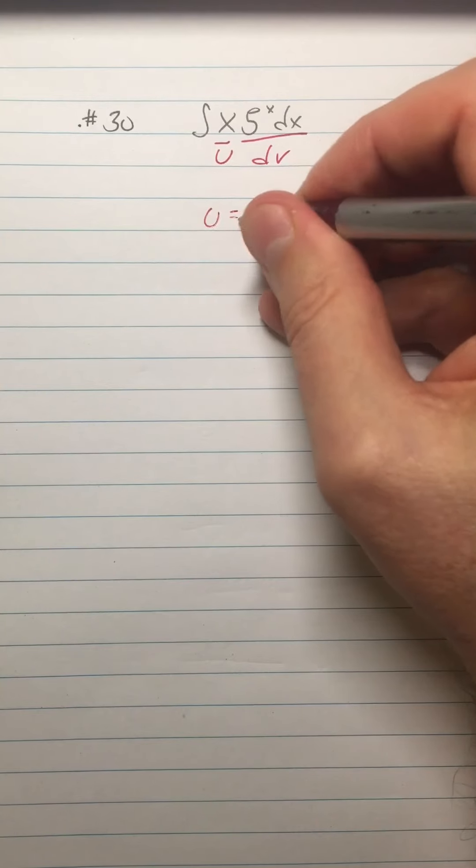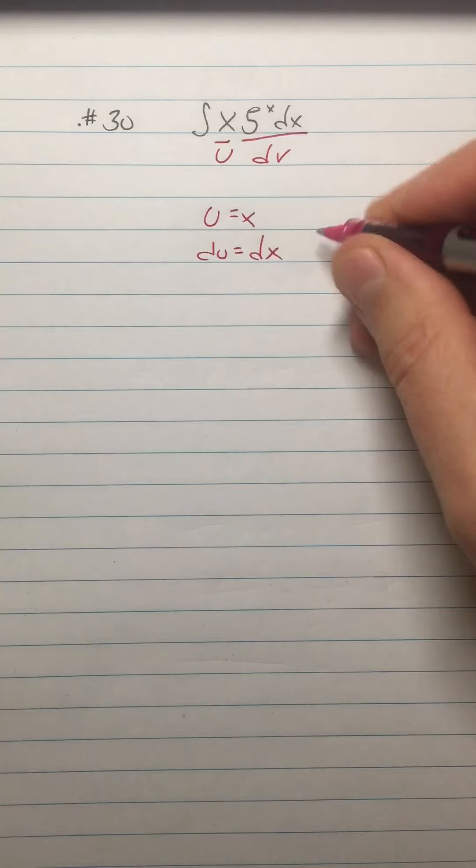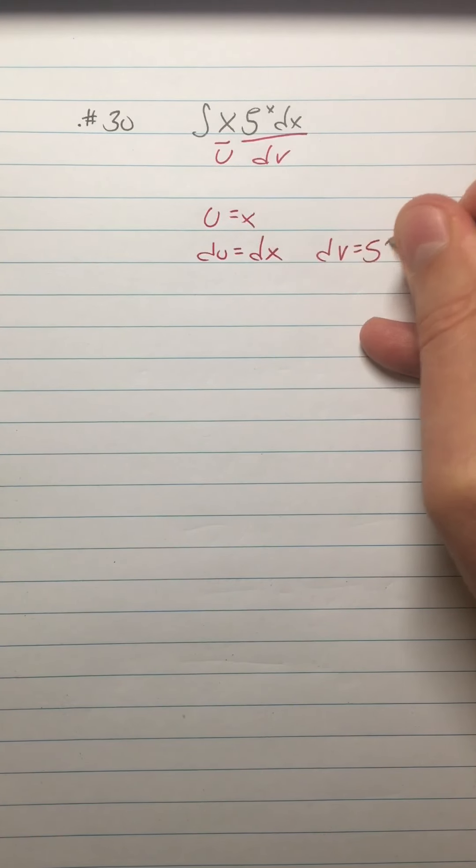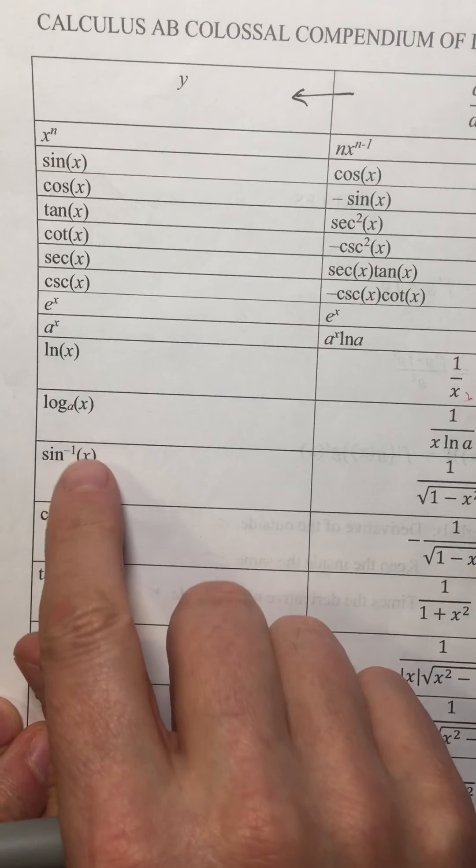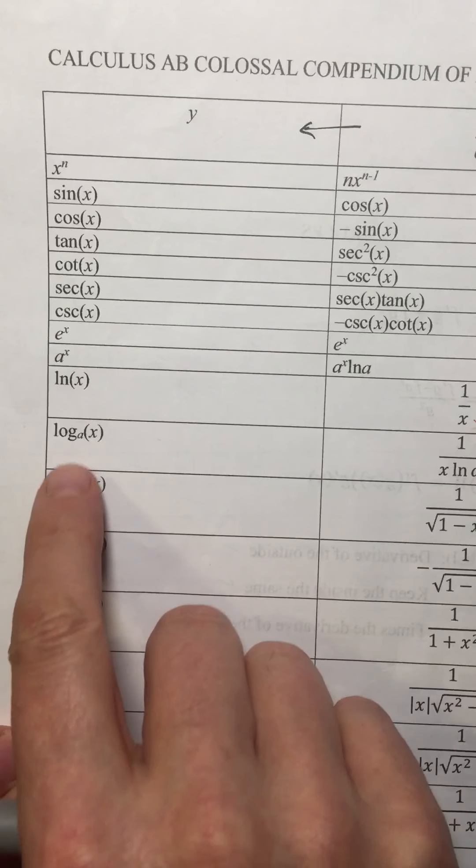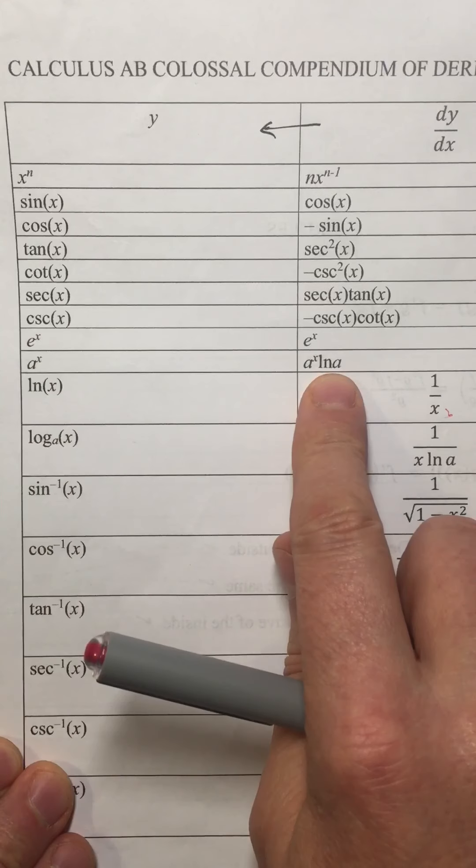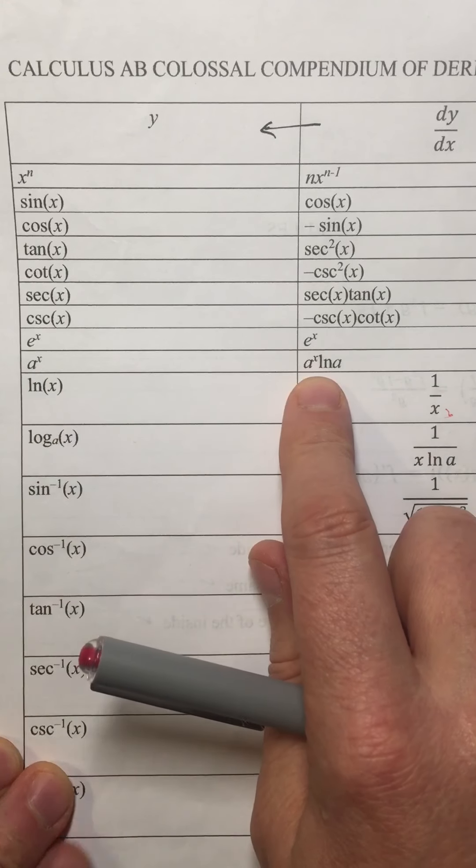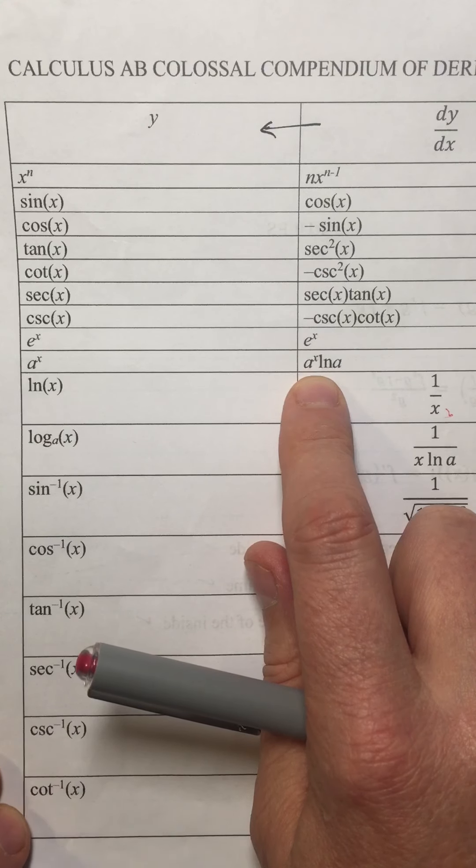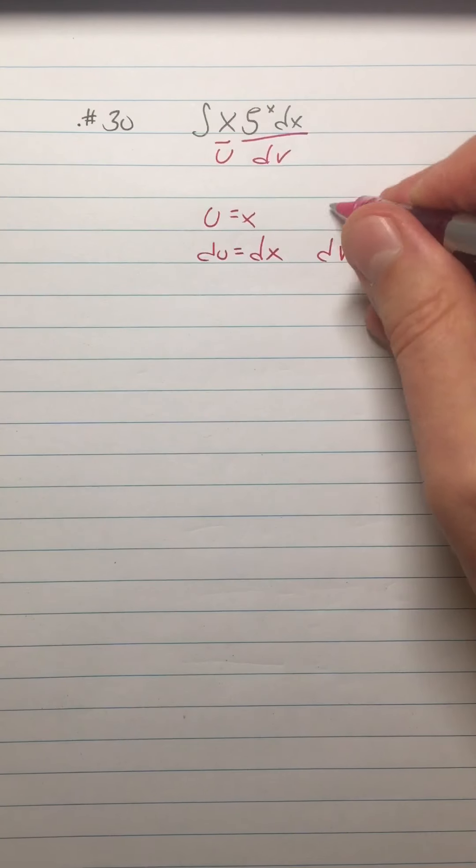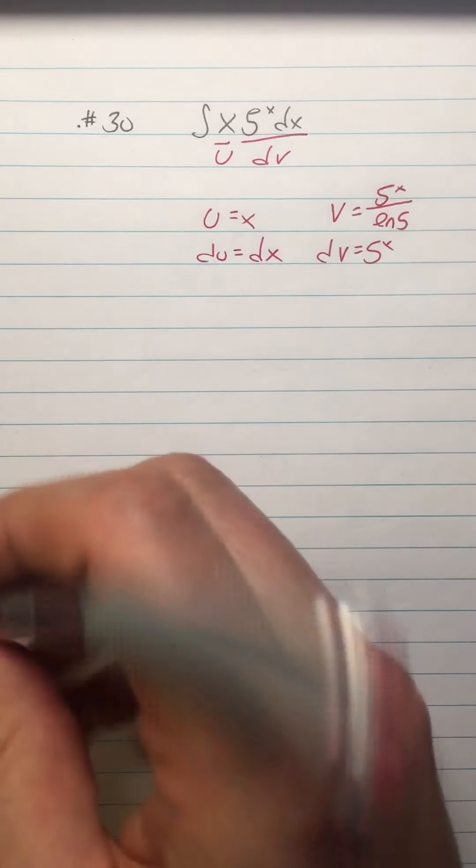So I have u equals x, du equals one dx, but I can just put dx. And then I have dv equals five to the x. Now here's the thing you have to remember what the antiderivative of five to the x is. So you have to, which is why I wanted to do this. If you have like two ones that people forget, this log base a, what is the derivative of that? And a to the x, what is the derivative of that? So since the derivative of a to the x is a to the x ln a and ln a is just a constant, that means the antiderivative of a to the x is a to the x divided by ln a. So the v here is going to be five to the x over ln 5.